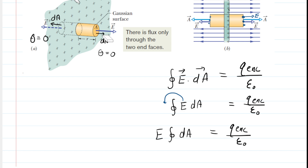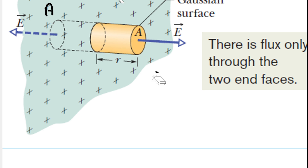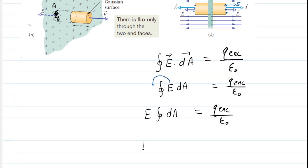As for the integral of dA, we consider the right end cap, which has little patch elements dispersed throughout. Adding all the areas of those patch elements gives you the total area of the right end cap. So all those dA areas added together simply give you the area A of the right end cap. Same with the left end cap — flux is penetrating that end cap as well, so that area is also A. The integral of dA is therefore the total area being penetrated by our electric fields: the area of the right end cap plus the area of the left end cap.